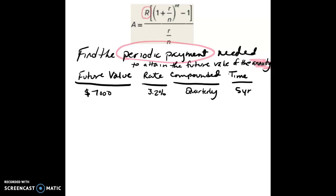So this time we are given the future value is $7,000, so that's A. The rate is 3.2%, so that's R. Compounded, it's 4 times a year, so that means that 4 times a year, that periodic payment will be made. So that's N. Quarterly equates to 4 times a year, once a quarter. And the time is over 5 years, so this is T.